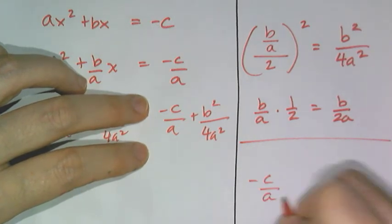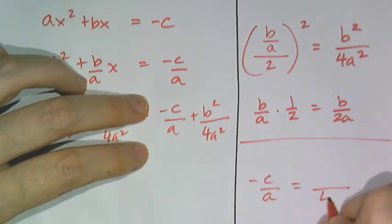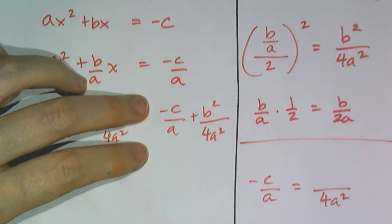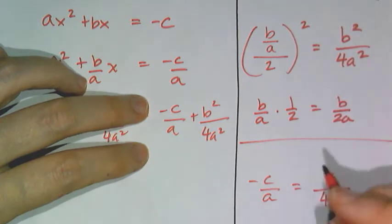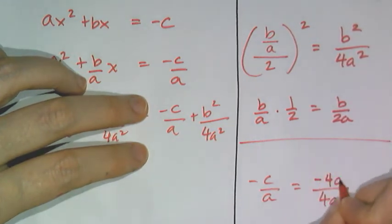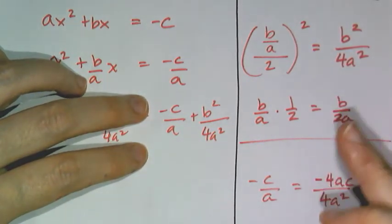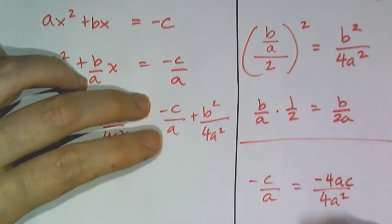So if I have negative c over a and I want it to equal something that's 4a squared on the denominator, it means I have to multiply the numerator by a 4 and an a. So I get negative 4ac. I'm just rearranging it so it looks familiar to the formula.